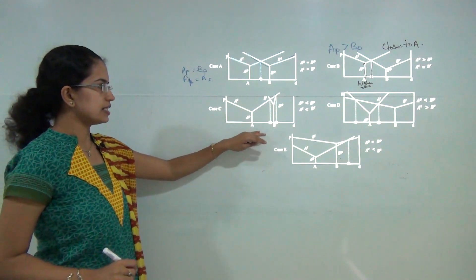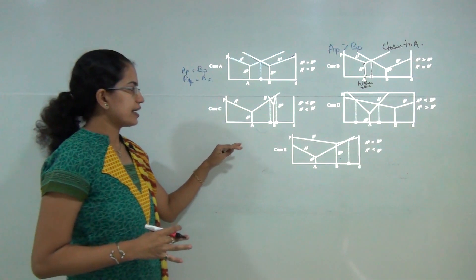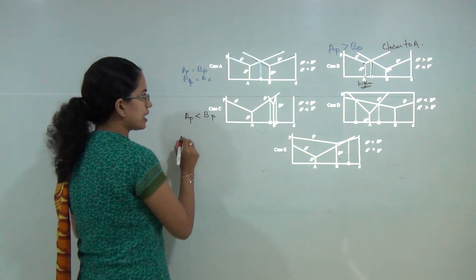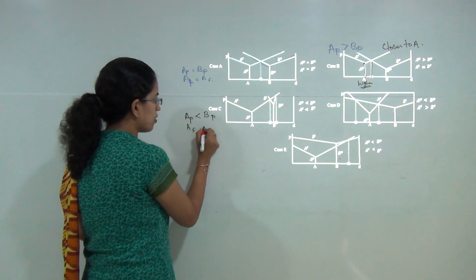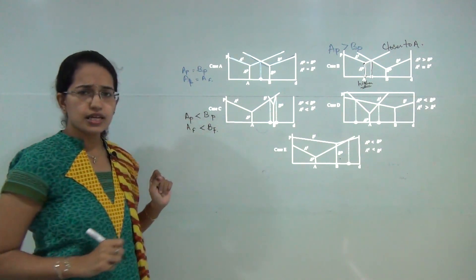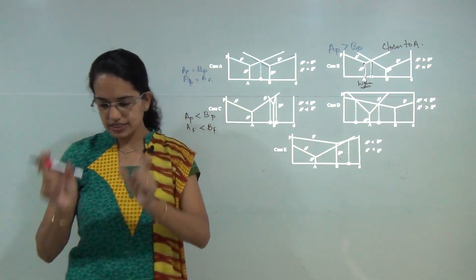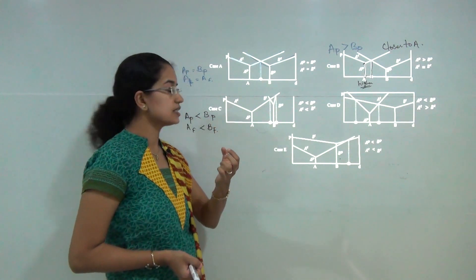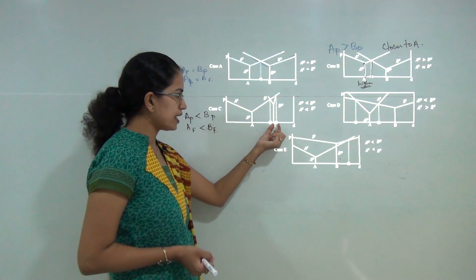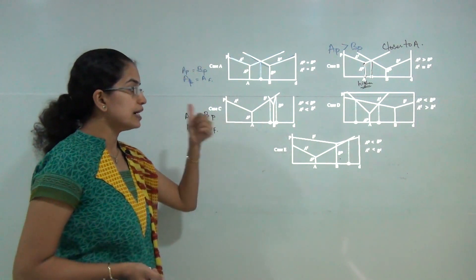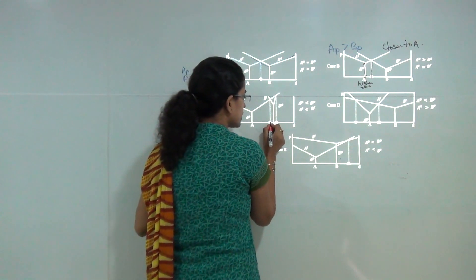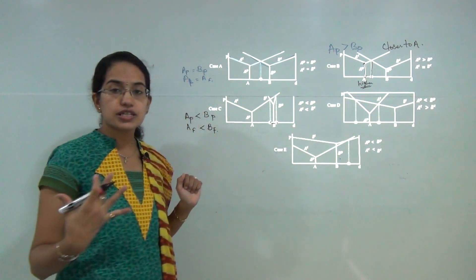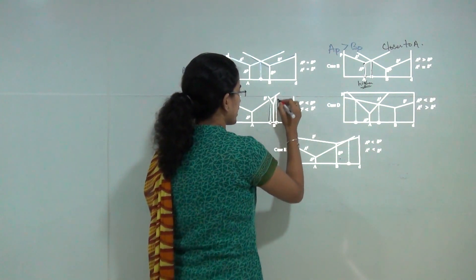The next case involves unequal freight rates and unequal price, where the price of A is less than price of B, and the transport or freight charges of A are also less than those of B. As a result, the market boundary confines itself to a very small area very close to B because of its higher price. Since B has higher production costs, it can only serve a market area very close to itself and cannot extend further, as moving farther would significantly increase total cost.